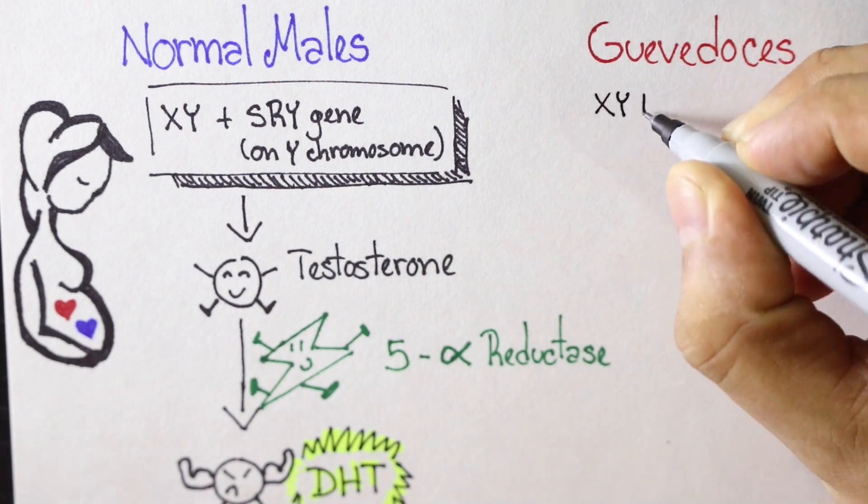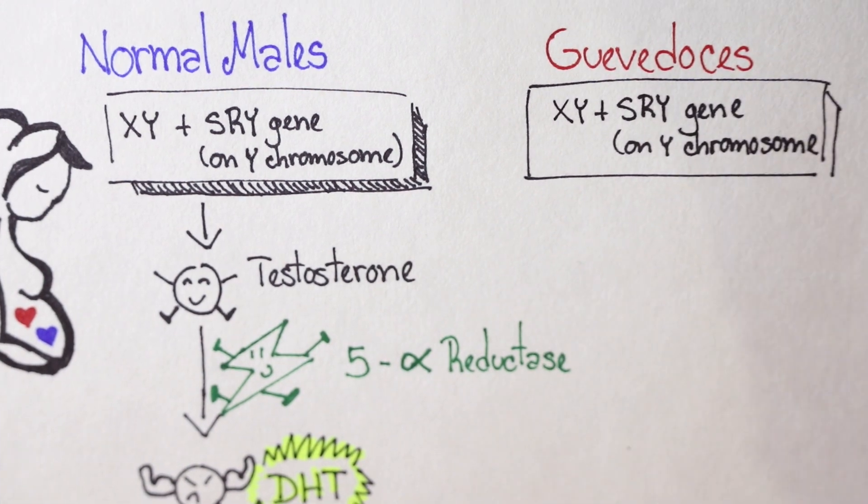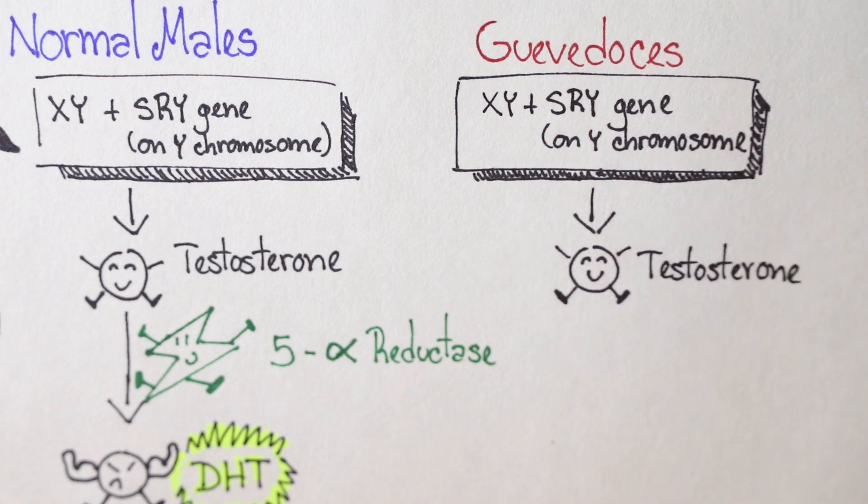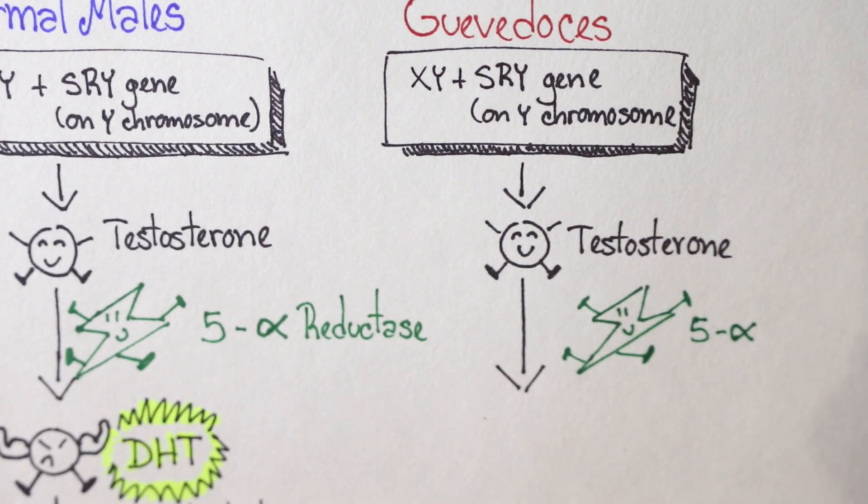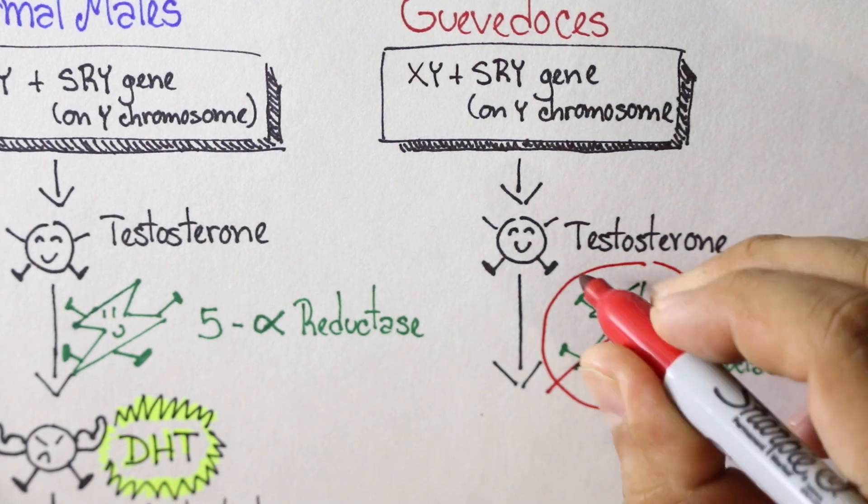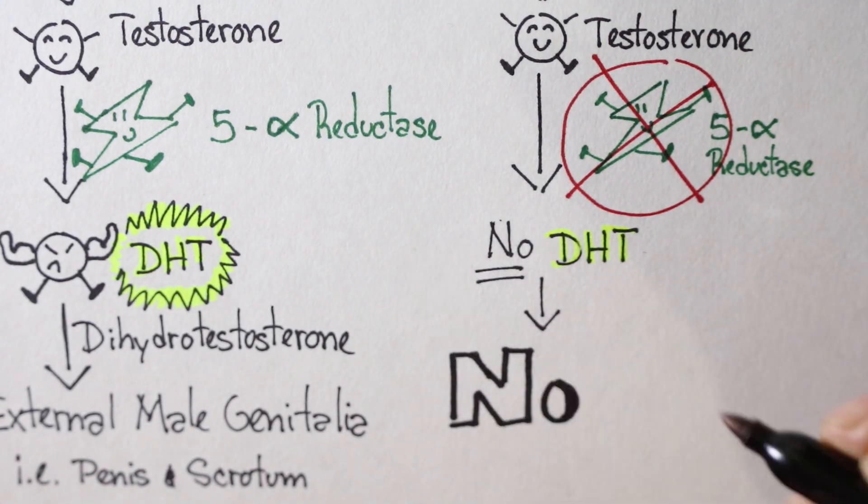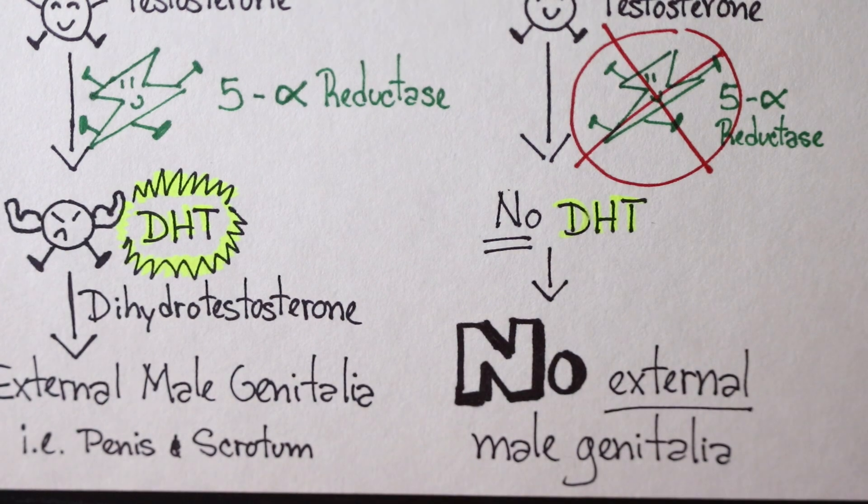Huevedosas have the XY chromosome pair with the activated SRY gene internal testes that produce testosterone. However, they do not have the enzyme 5-alpha reductase, so their external genitalia never developed, and this is the reason why they look like girls when they are born.